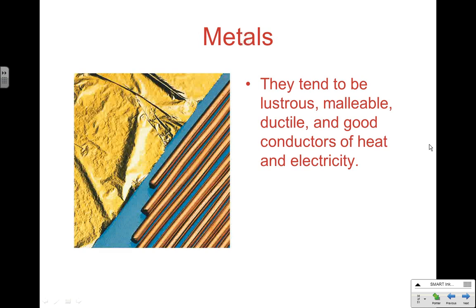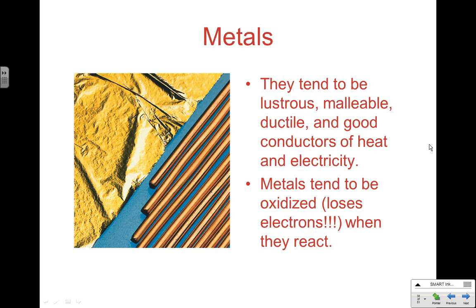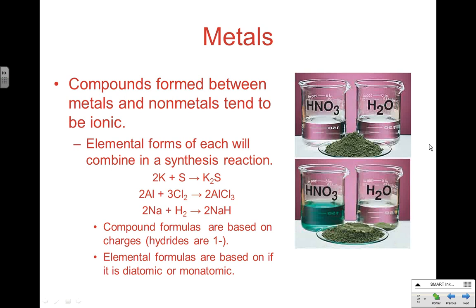Properties of metals: they're shiny — you can see gold is shiny and that brownish-looking stuff would be copper. They're lustrous, malleable, and good conductors of heat and electricity. Metals tend to be oxidized, meaning they lose electrons. Remember OIL RIG — oxidation is the loss of electrons. When a metal and nonmetal combine, you get an ionic compound, since one wants to gain and one wants to lose electrons.